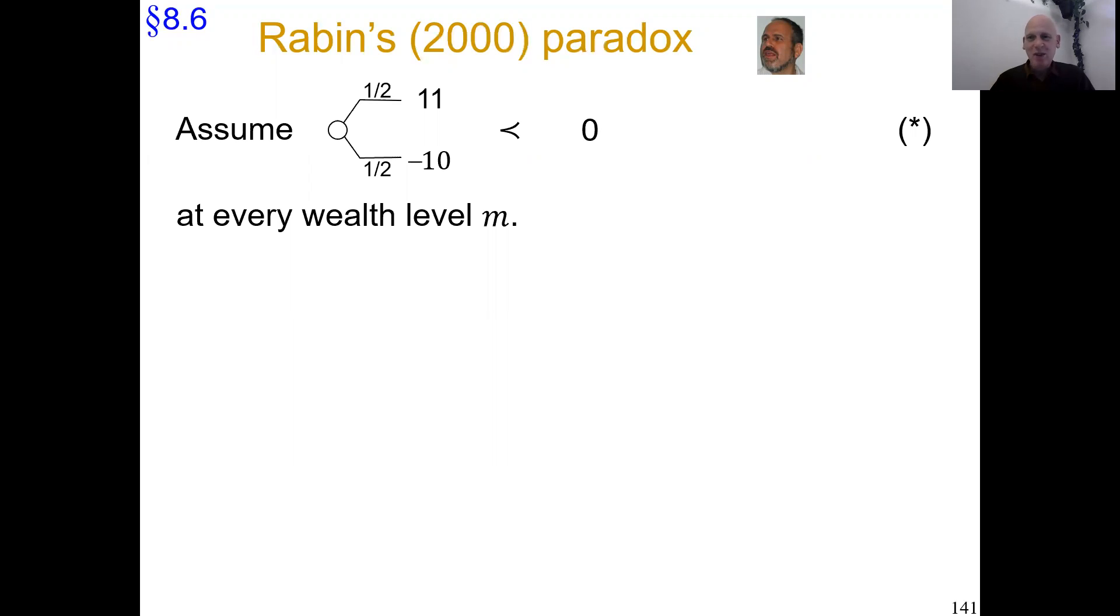But first comes the reference-dependent analysis. I didn't explain reference dependence models yet, so let me put up an inequality and then explain what is happening. No probability weighting, right? So we assume expected utility inequality here, but in reference dependence, we assume that the utility function and expected utility function can depend on the wealth level. That dependence is expressed by that subscript, the small m.